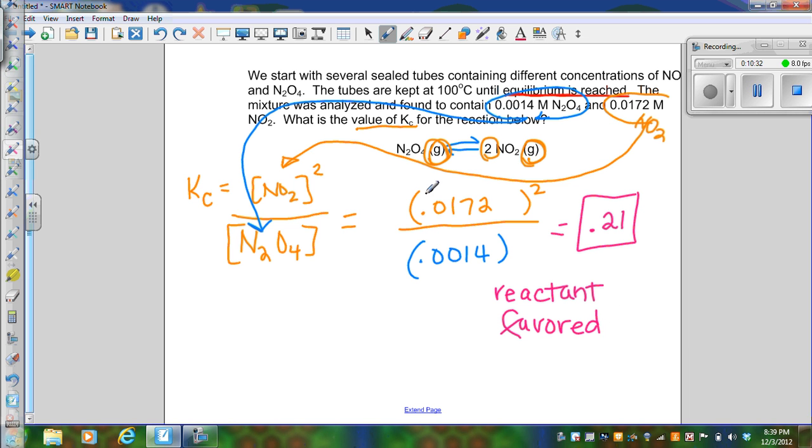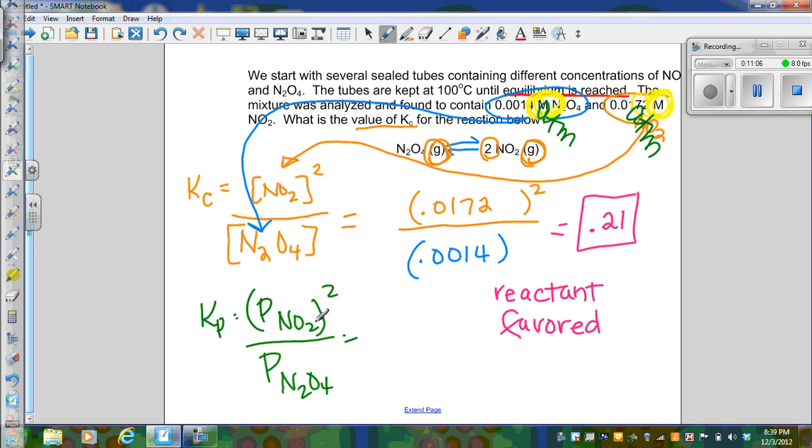Now if you were doing this with pressures, how this would look different is you would be given pressures here instead of concentrations. You would write your expression as Kp equals the pressure of NO2 squared divided by the pressure of N2O4. You would substitute your pressures, which would be written in atmospheres most likely, into the expression, and you would solve. It works the same way.